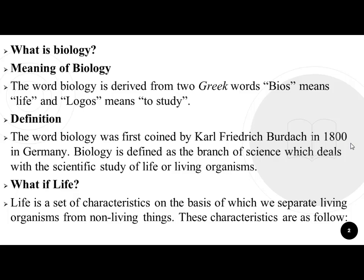زندگی خصوصیات کا ایک مجموعہ ہے جس کی بنیاد پر ہم جانداروں کو غیر جاندار چیزوں سے الگ کرتے ہیں۔ یہ خصوصیات درج ذیل ہیں۔ نمبر ایک: Cellular Organization.